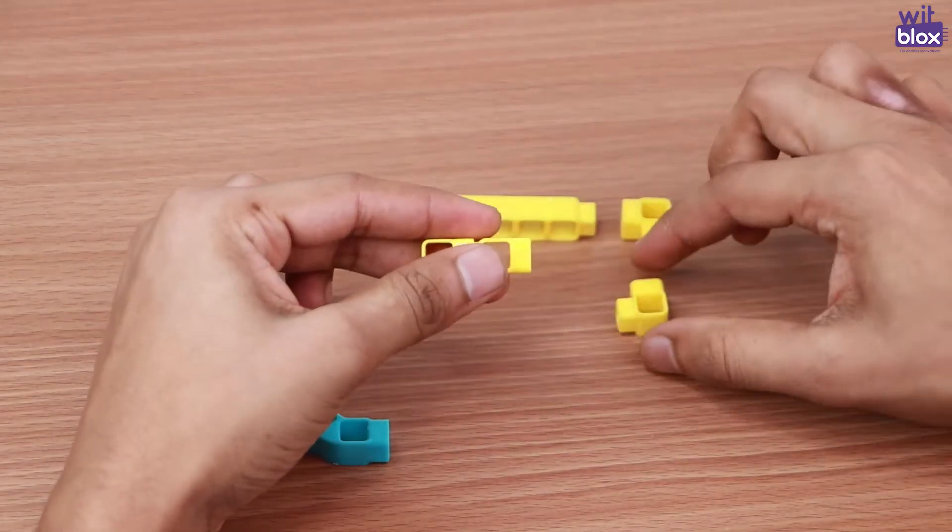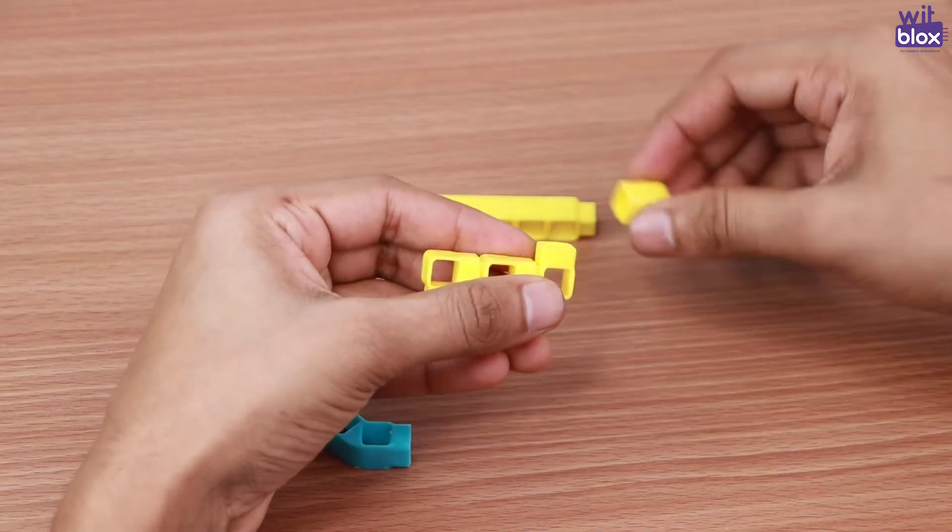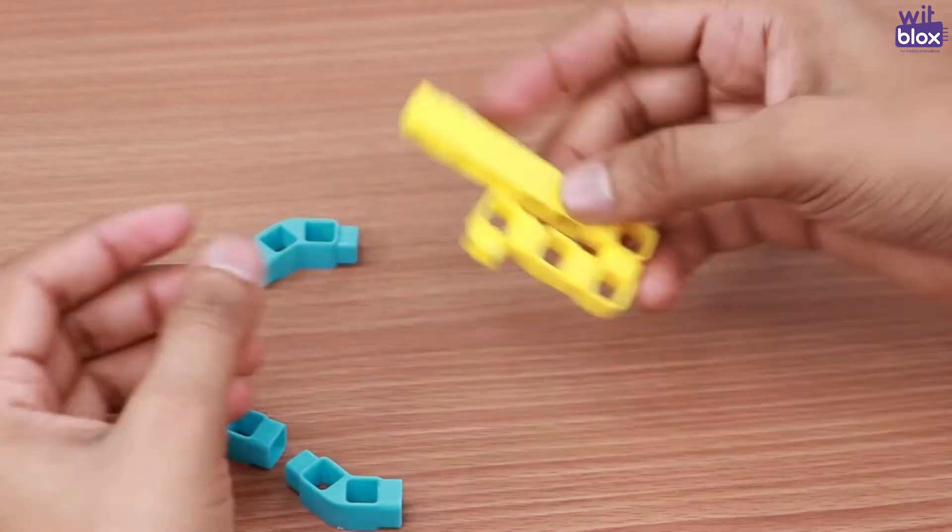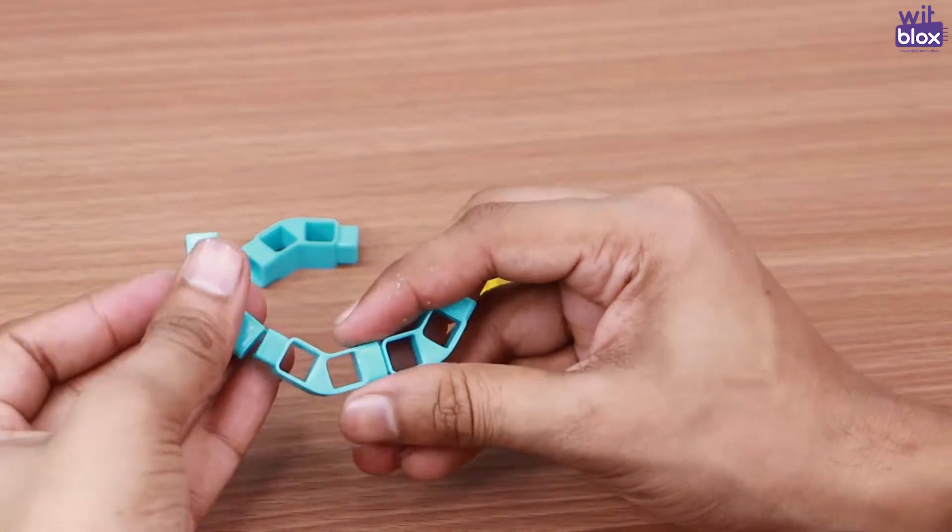Now let's make the tail part of the snail robot. For this we will use 45-degree 2-hole elbow, 5-hole beam and 90-degree single-hole elbow.